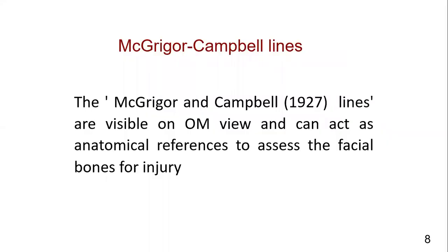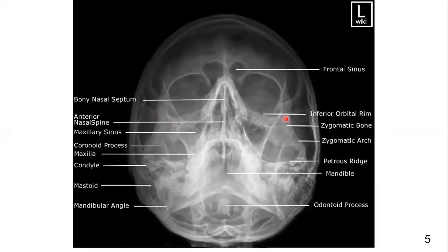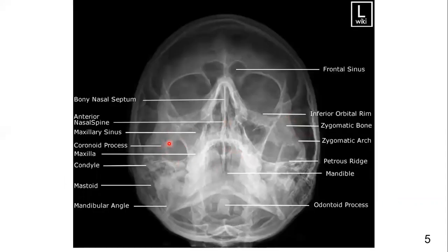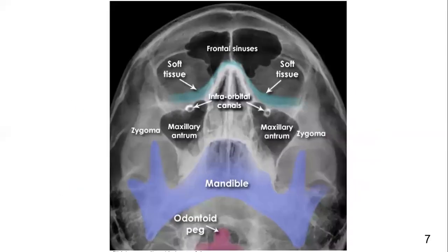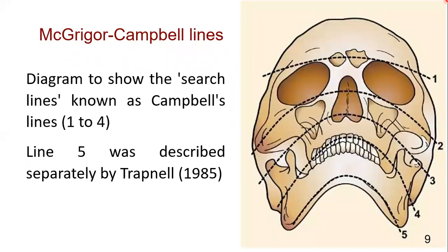It is very difficult to see a fracture if you look haphazardly in these areas. Even if there is a fracture in this area, you will not be able to interpret it properly without a systematic approach. Campbell's and McGregor's lines are the best method to interpret the radiograph and find fractures of the mid-face, and especially for the maxillary fracture we are discussing.